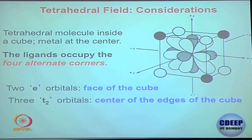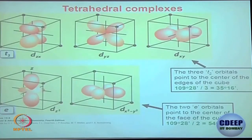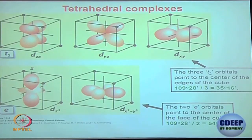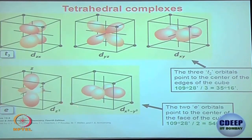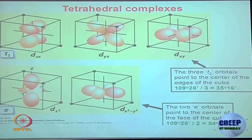We will be calling them e orbitals and t2 orbitals. In tetrahedral it is the reverse of octahedral — dz² and dx²-y² are going to be stabilized because these orbitals face the ligands least. You can see the 4 ligands as 4 black dots. The dz² and dx²-y² orbitals are farthest from the ligand, so repulsion is less and they are the ones which are stabilized.